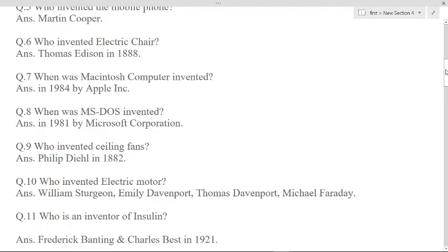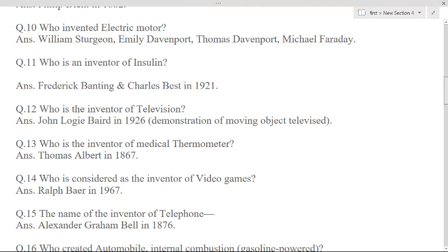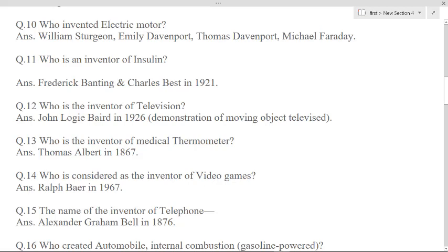Who invented electric motor? William Sturgeon, Emily Davenport, Thomas Davenport, Michael Faraday. Who is an inventor of insulin? Frederick Banting and Charles Best in 1921. Who invented television? John Logie Baird in 1926, demonstration of moving object televised.